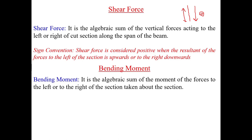The bending moment is the algebraic sum of the moments of the forces to the left or right of the section, taken about that section. It is also very important to note two things in this definition: first, it is an algebraic sum; second, it is taken either to the left or to the right of the section.